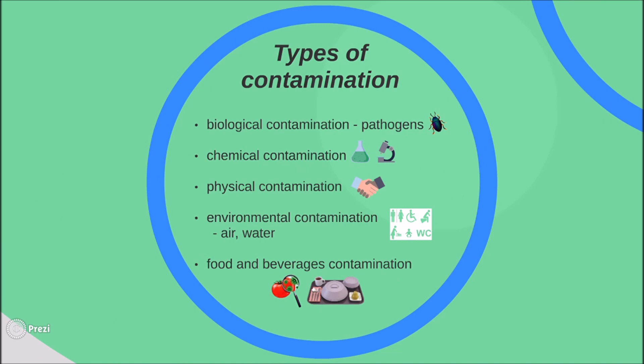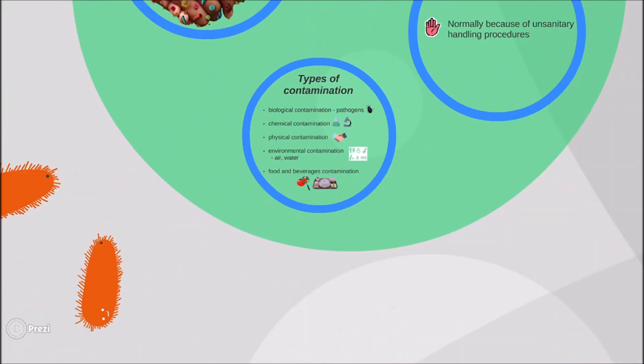First, it's important to define the types of contamination that exist. There is biological contamination, like viruses, fungi, bacteria, and allergens; chemical and physical contamination; environmental contamination such as air and water; and food and beverages contamination.